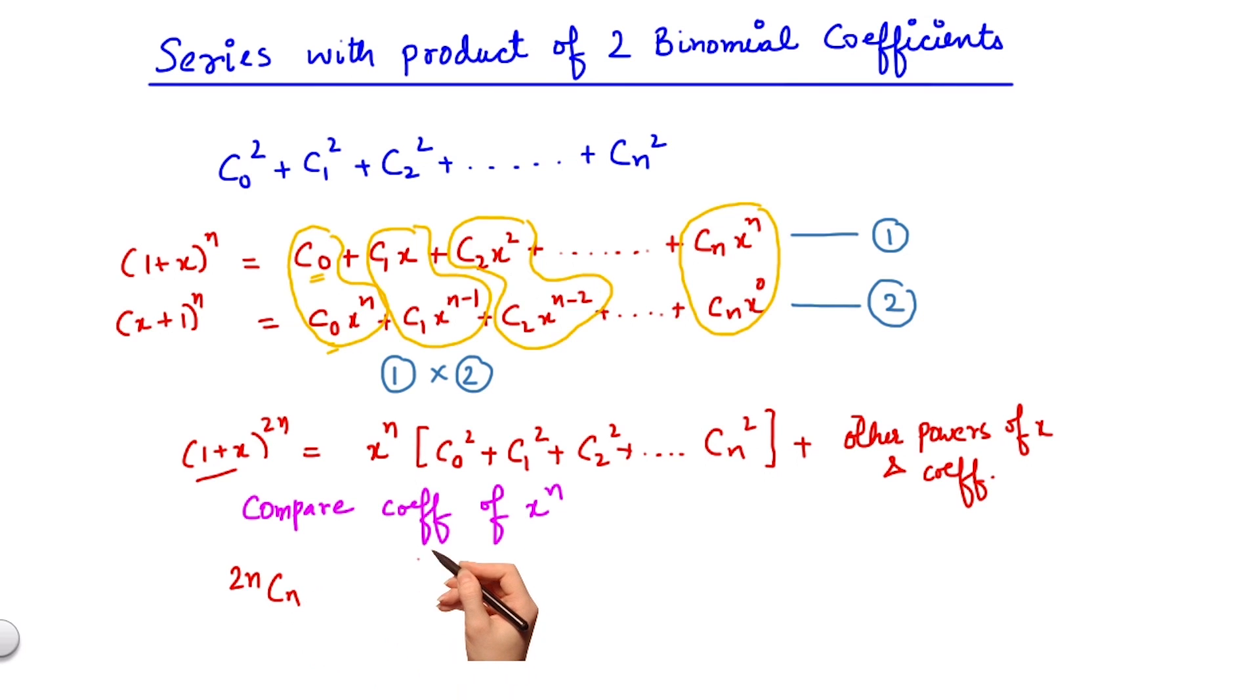On the right hand side, I have already shown that the coefficient of x to the power n is c0 square plus c1 square plus c2 square until cn square, which in fact is my desired sum. Hence the desired sum is 2n cn.